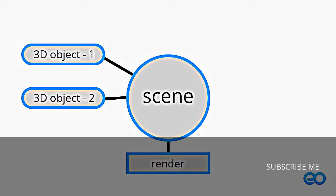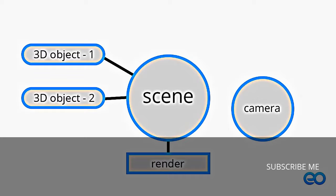There is a problem though — the computer doesn't know which angle the scene has to be rendered from, so it will just give you a blank slate. To solve this, you create a camera which represents the three-dimensional coordinates for the rendering. Once a camera is set up, you connect it to the renderer so the scene is rendered through that camera. This is the simplest setup you can have inside Nuke for a 3D scene.